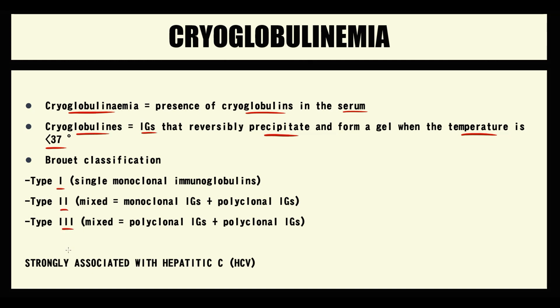The second and third types are mixed types with different immunoglobulins. Type 2 is a mix of monoclonal and polyclonal immunoglobulins, and type 3 is a mix of polyclonal immunoglobulins. Both type 2 and type 3 cryoglobulinemias are strongly associated with hepatitis C.